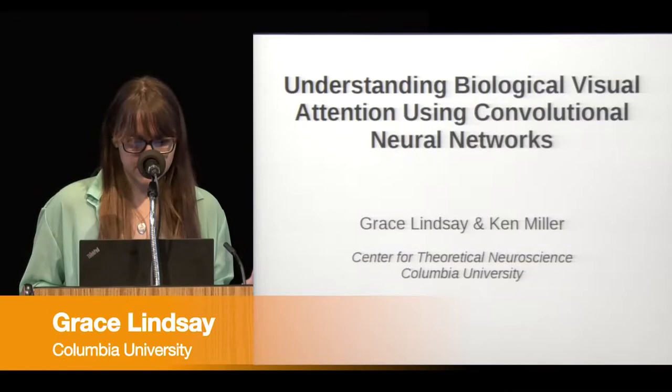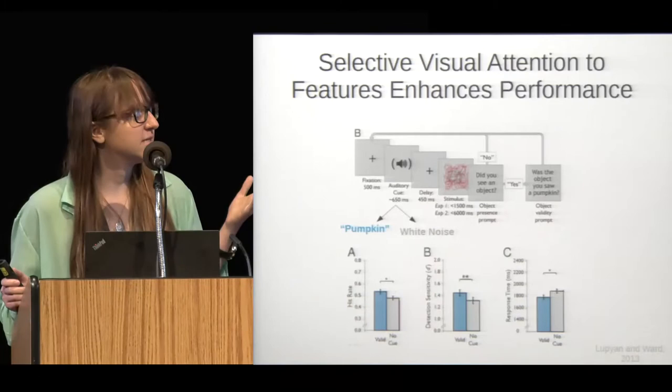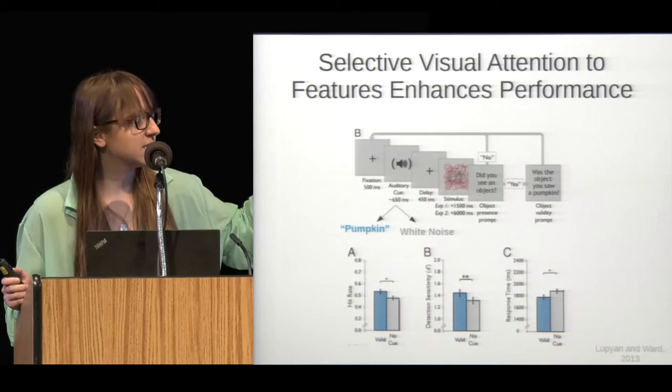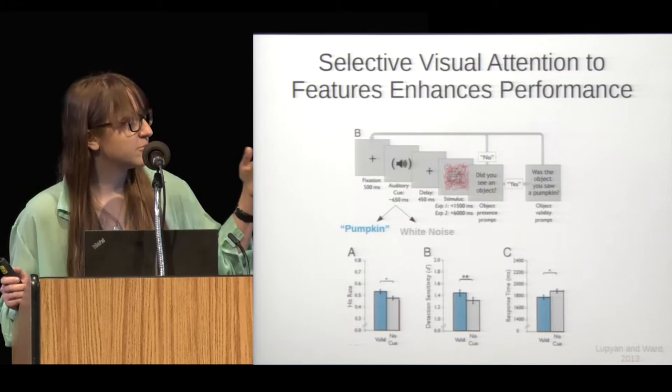I want to start by talking specifically about the type of attention that I'm interested in — what I'm studying — and that would be selective visual attention to features. This would be studied normally in a task structure that looks like this. The subject is cued at the beginning of a task, in this case with an auditory cue for a particular object type.